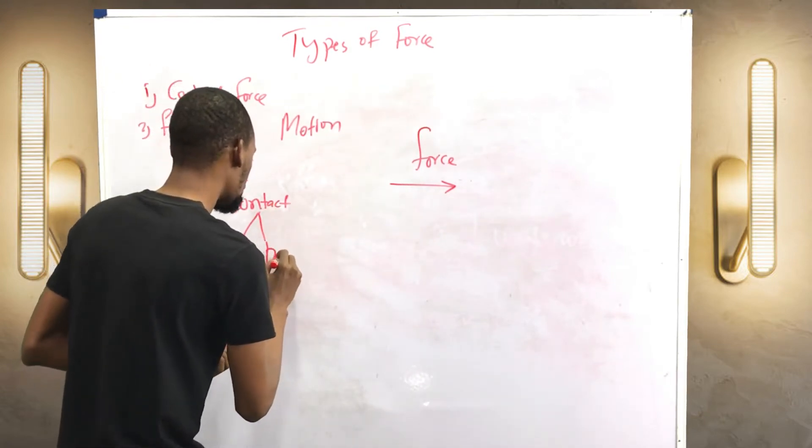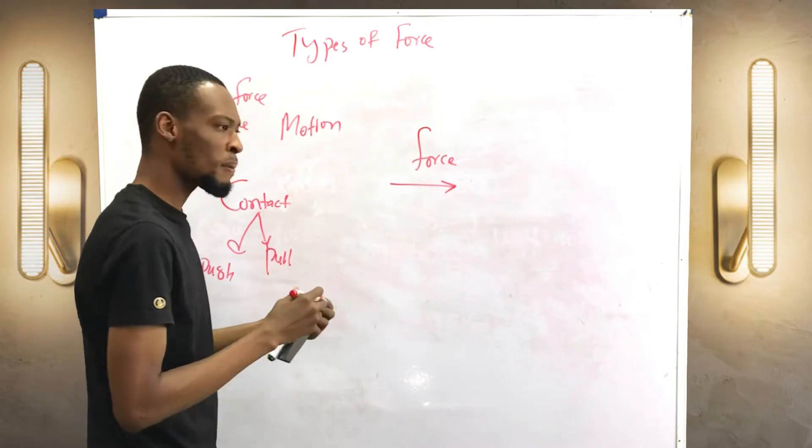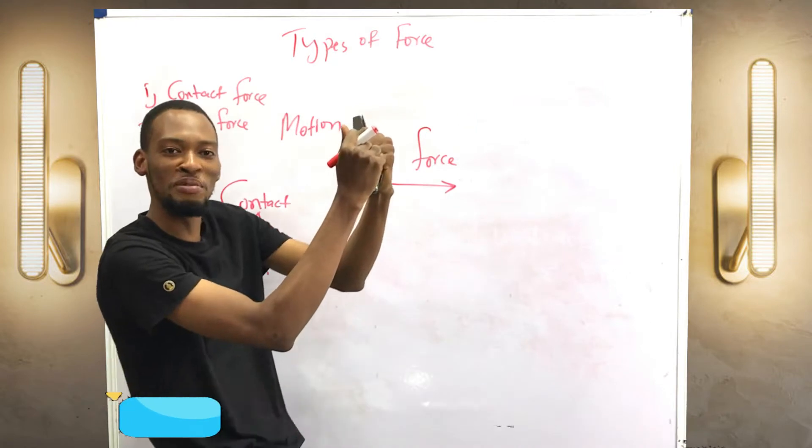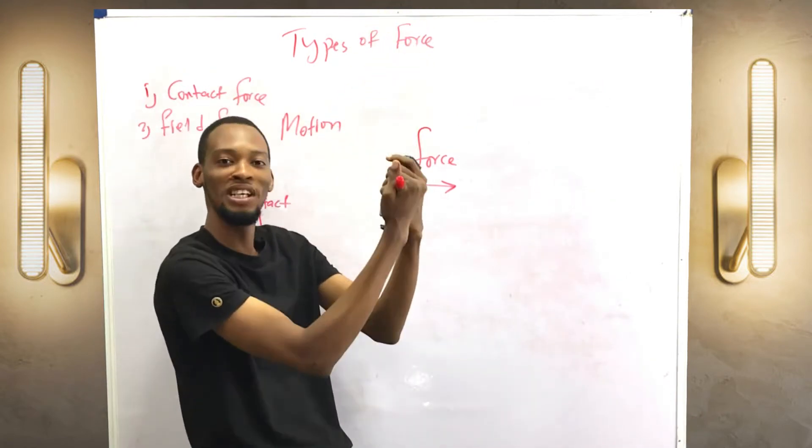We have pull. So probably you see somebody going up and you don't want the person to leave you. You draw the person down. Don't leave me. Stay with me.